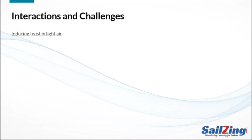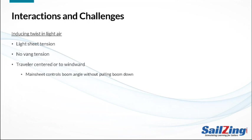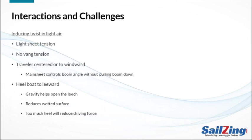Getting twist in light air can be a challenge since the wind may not be strong enough to open the leech. To induce twist in light air: minimize downward tension on the boom by using light tension on the mainsheet, no tension on the vang, and the traveler on center or even to windward a bit. Pulling the traveler to windward further reduces downward tension on the boom. Also, you must heel the boat — this lets gravity help open the leech and reduces the wetted surface of the hull. Many sailors don't heel aggressively enough in light air, but be careful not to overheel since too much heel reduces sail power and driving force.